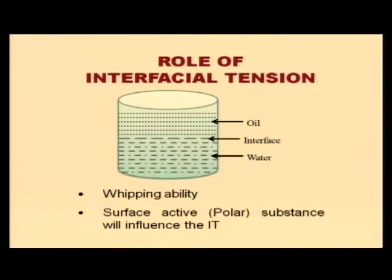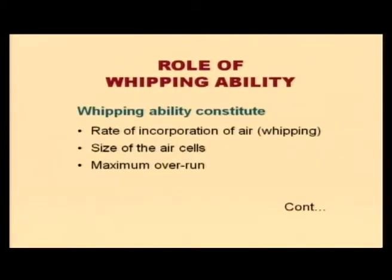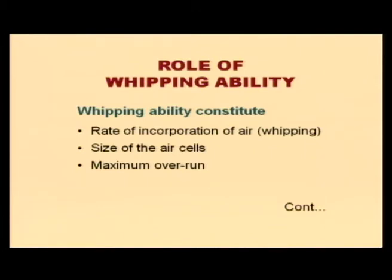The next property is whipping ability, which is very important and constitutes three things: one is the rate of incorporation of air — faster incorporation of air means better whipping ability; size of the air cell — if the air cells are smaller, whipping ability is better because smaller air cells make the ice cream smoother in texture; and maximum overrun which can be obtained, meaning the maximum air which can be incorporated into the mix. These three things constitute whipping ability.